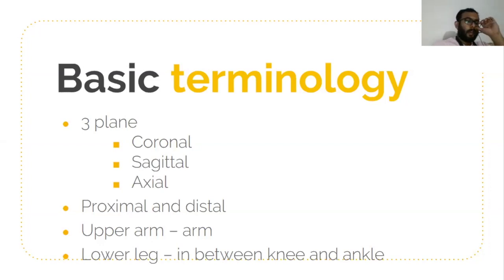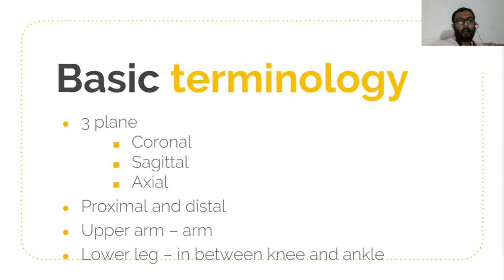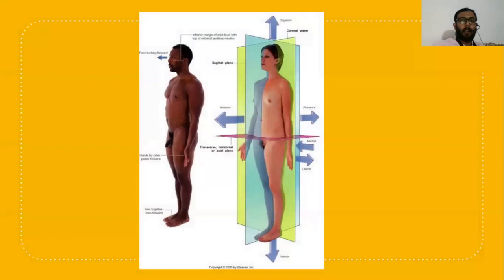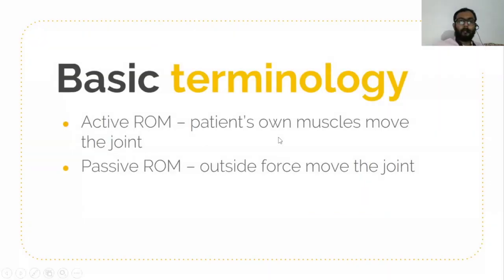Regarding orthopedics, proximal means near to the heart and distal means away from the heart. The upper arm includes the area between the shoulder joint and elbow joint. The lower leg is between the knee and ankle. This is the coronal plane, this is the sagittal plane, and this is the axial plane.